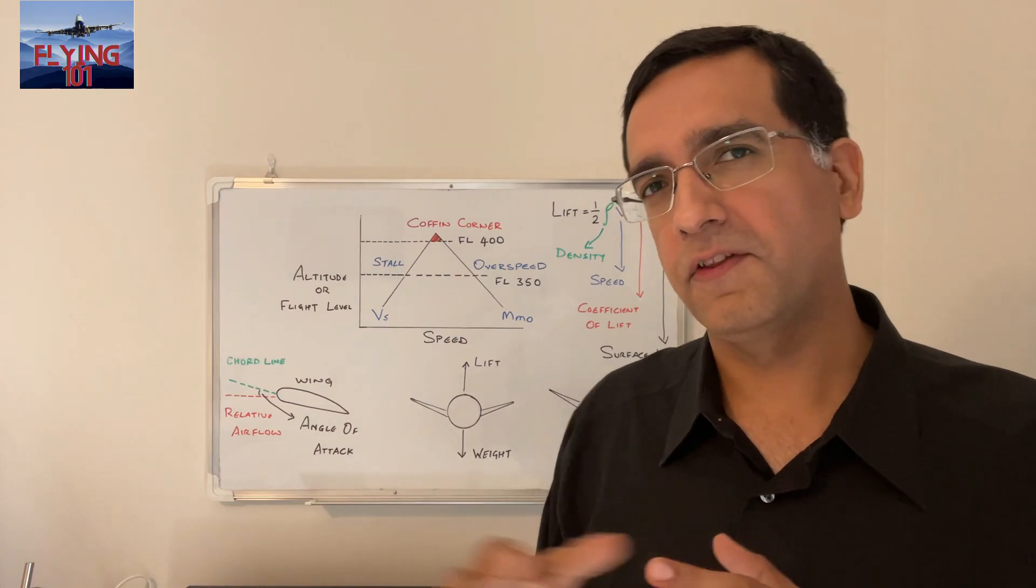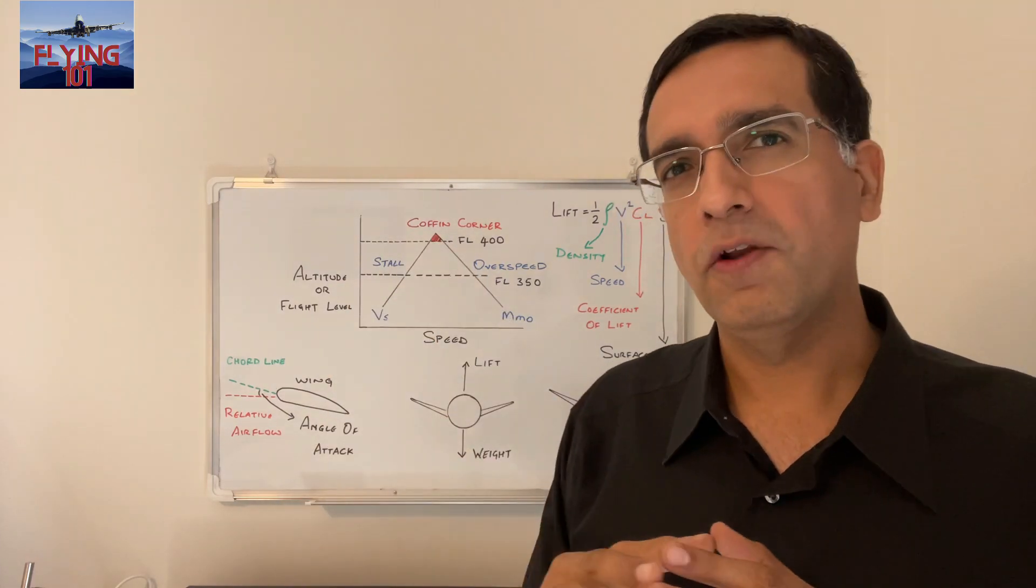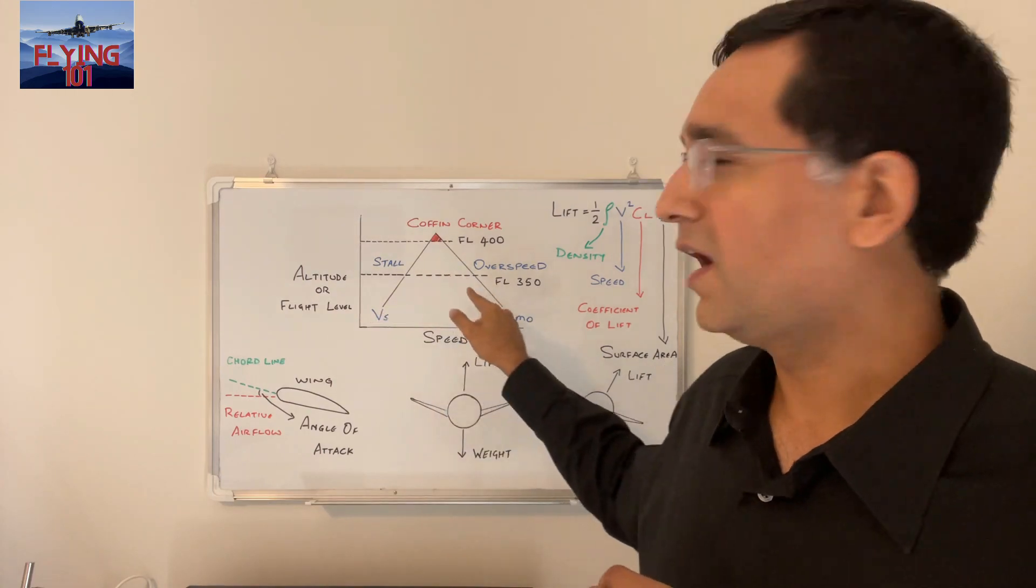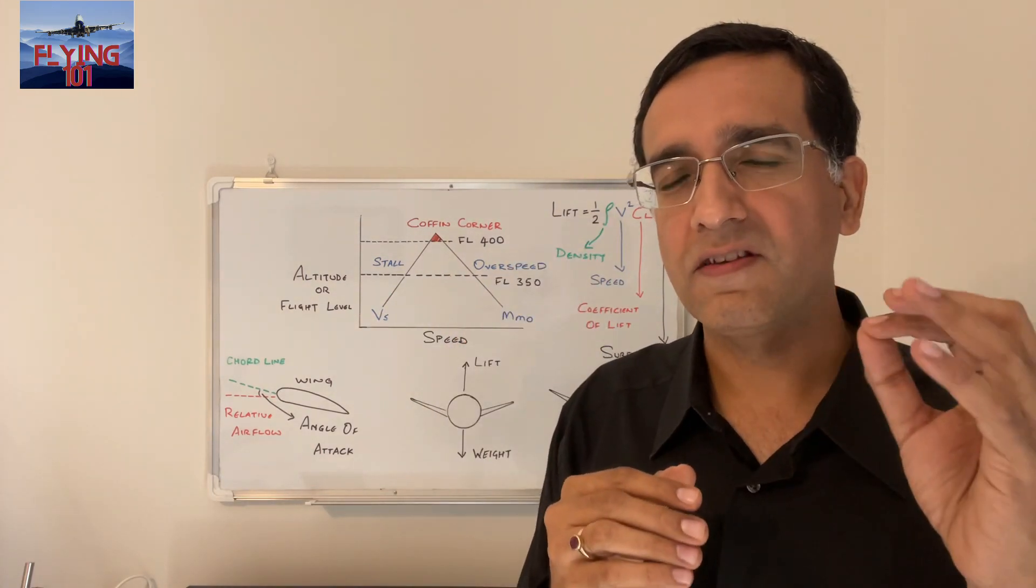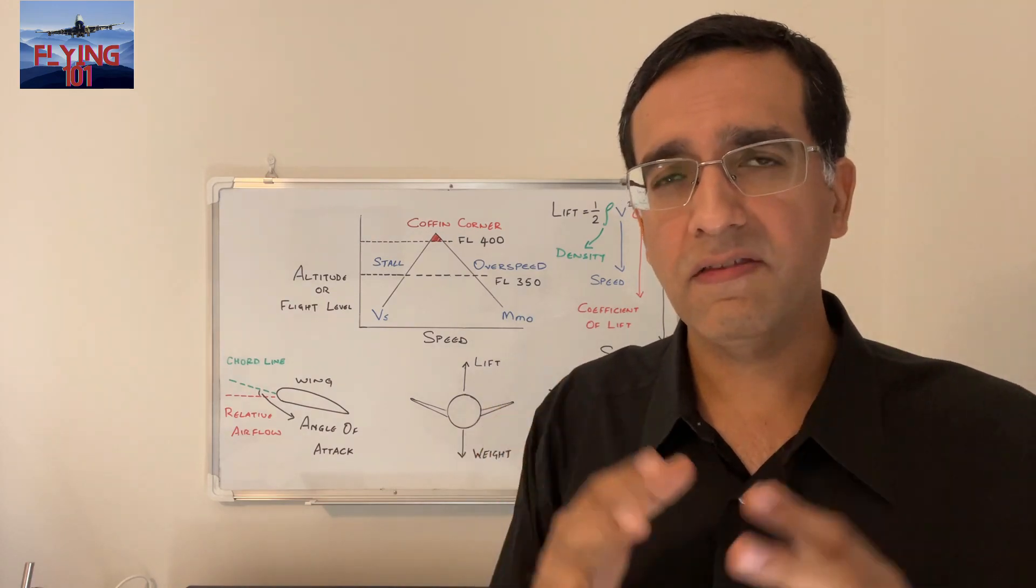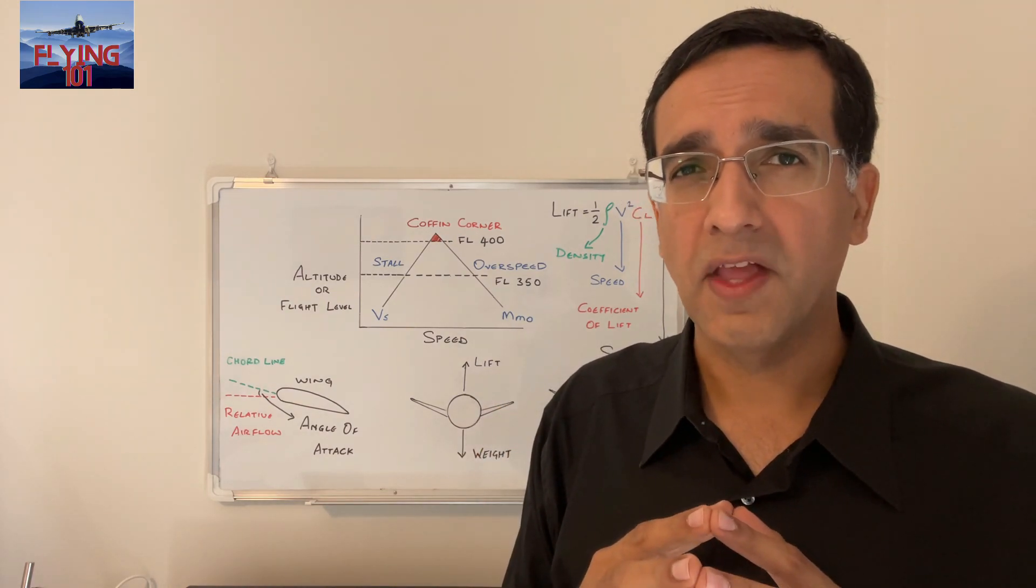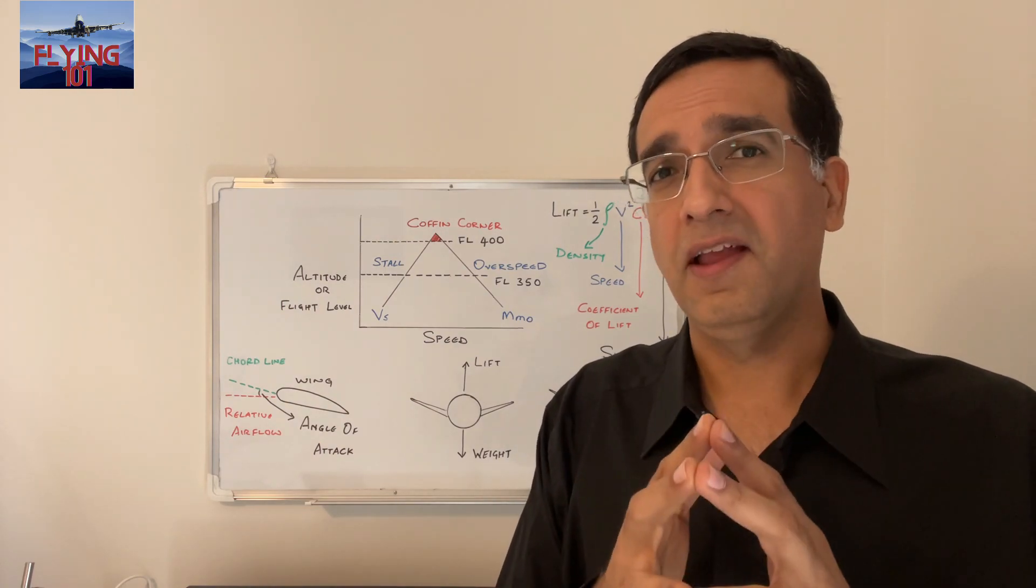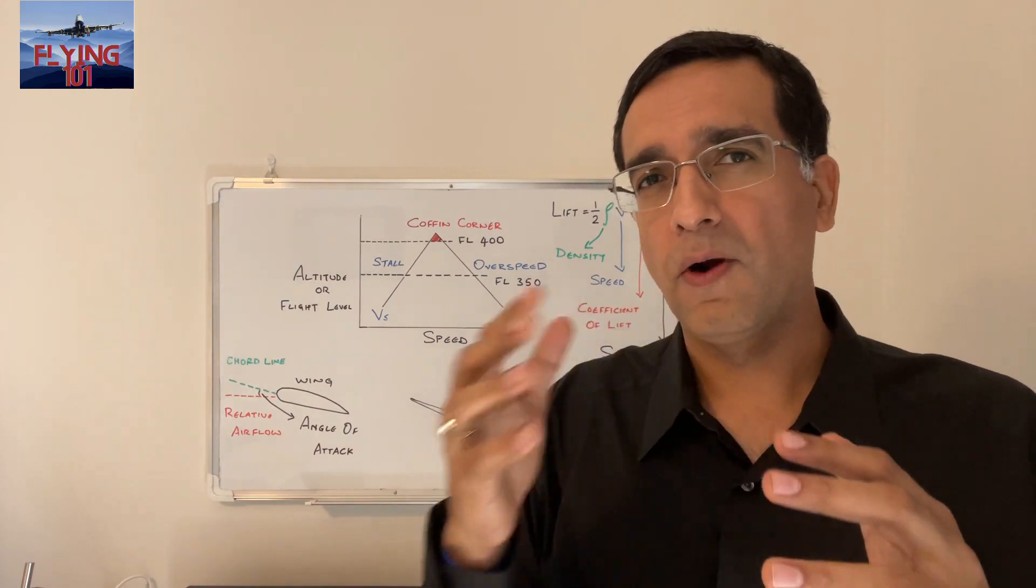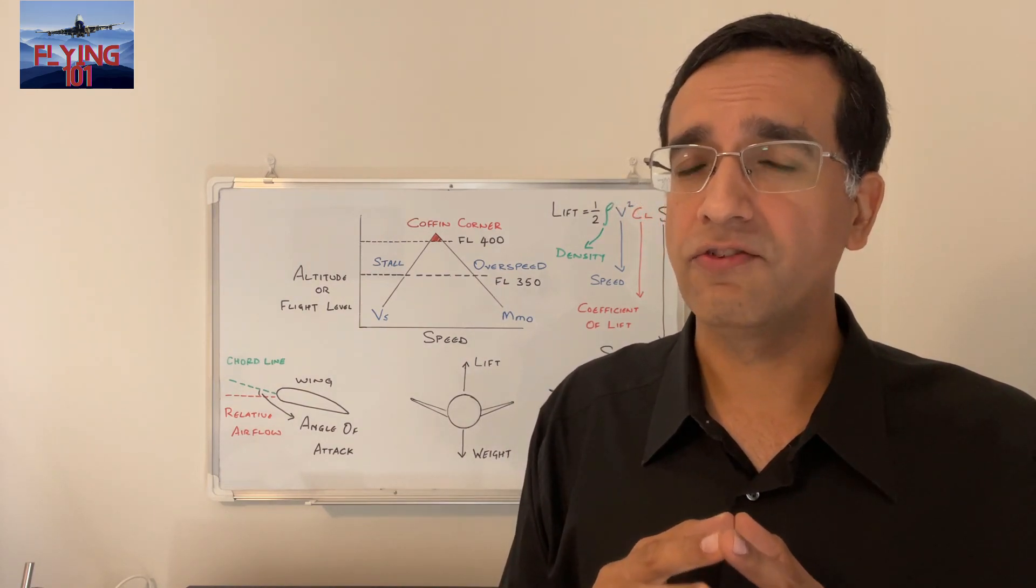If an aircraft was flying close to the coffin corner, so the point where the margin between the stall speed and the high speed buffet was very tight, even a small disturbance, say due to turbulence, may cause an increase in the aircraft's load factor, which could potentially lead to a low speed or a high speed buffet, something that can be quite dangerous.